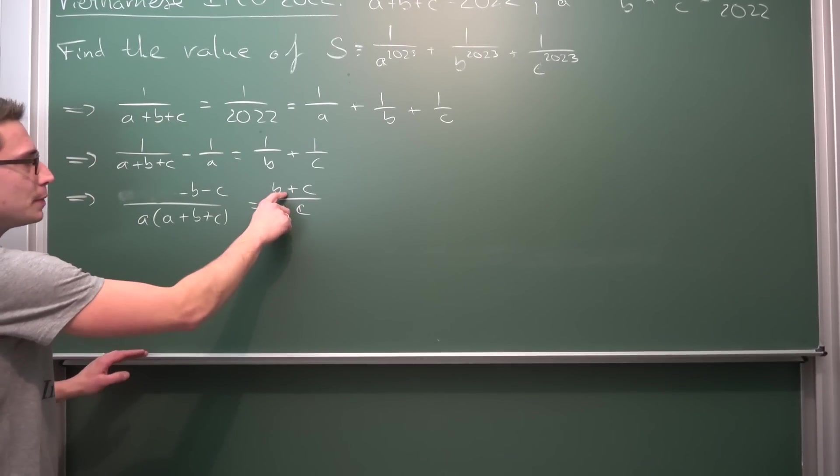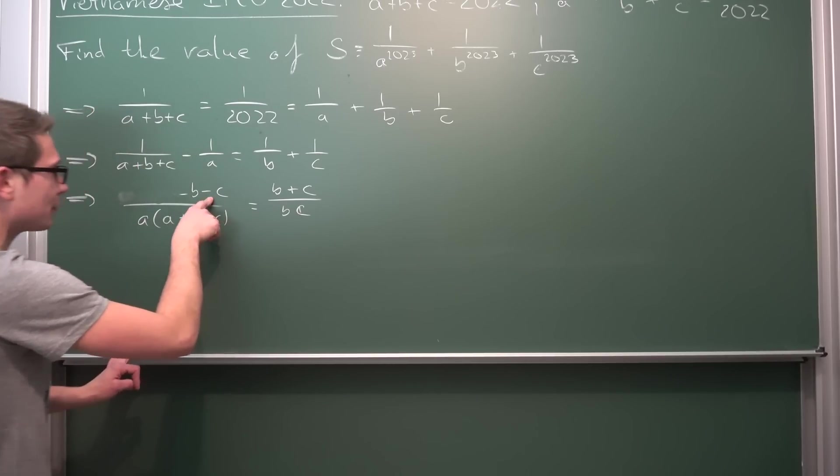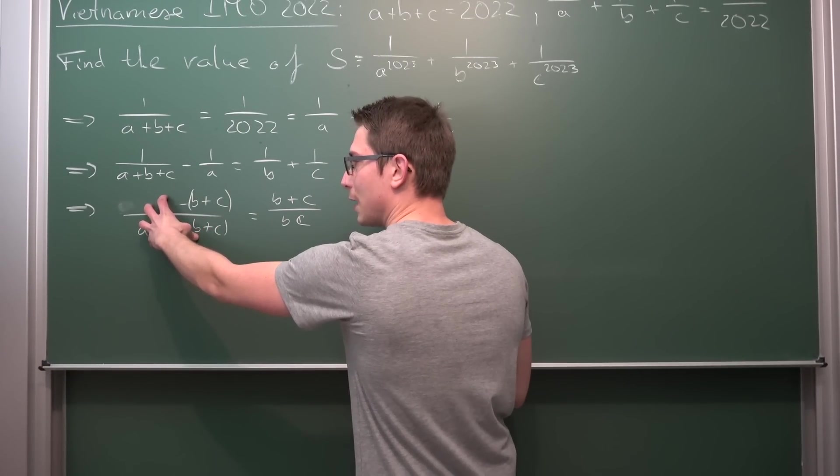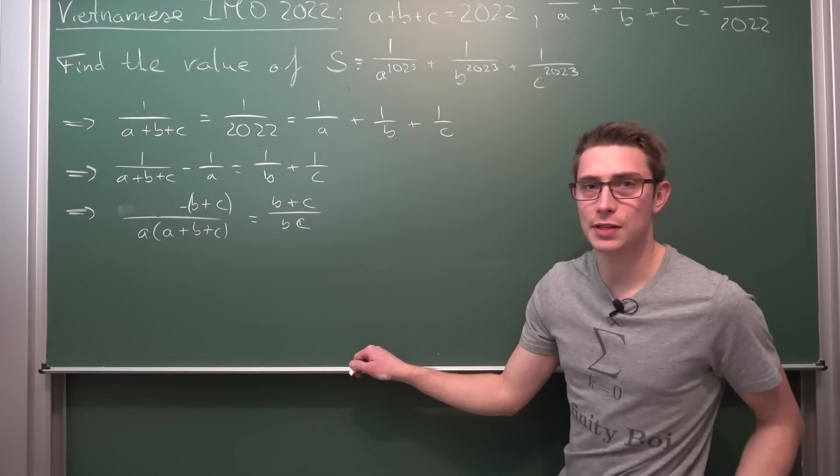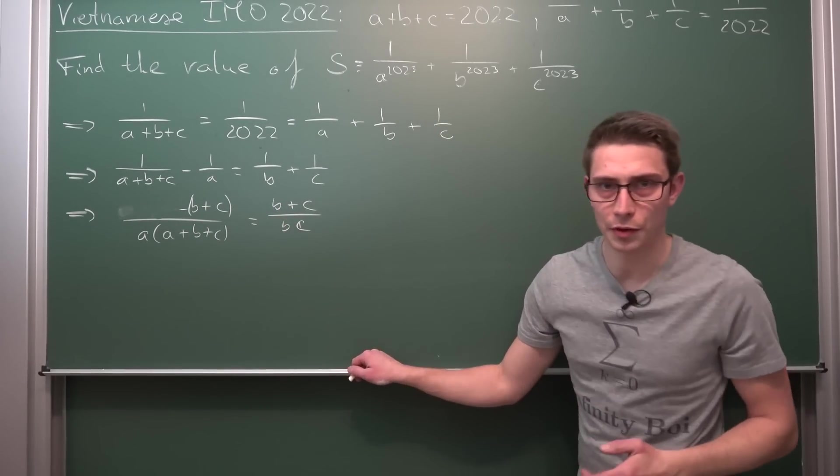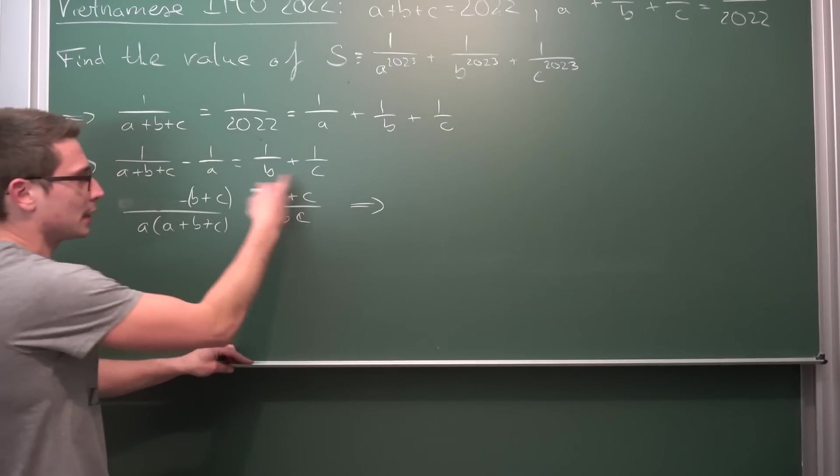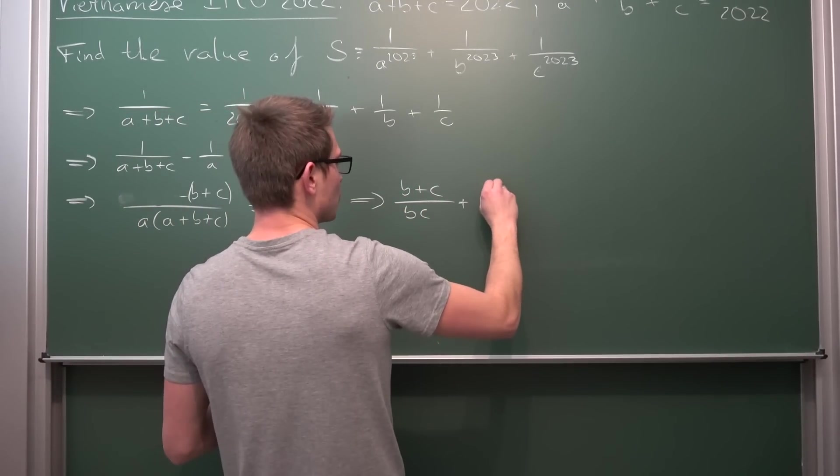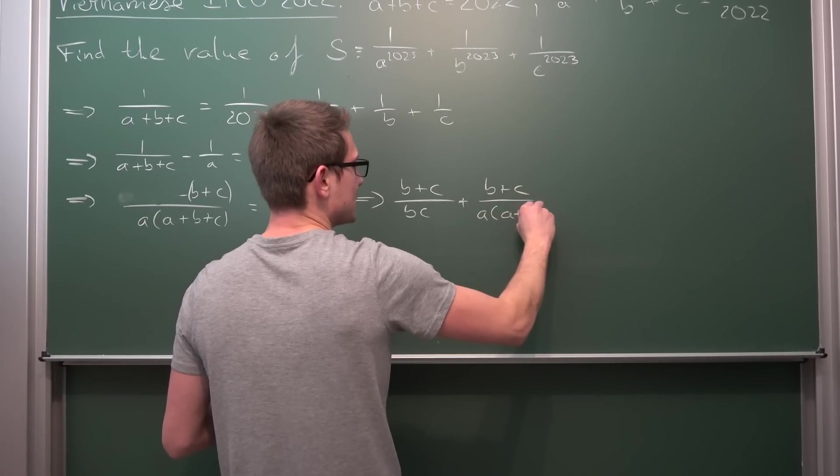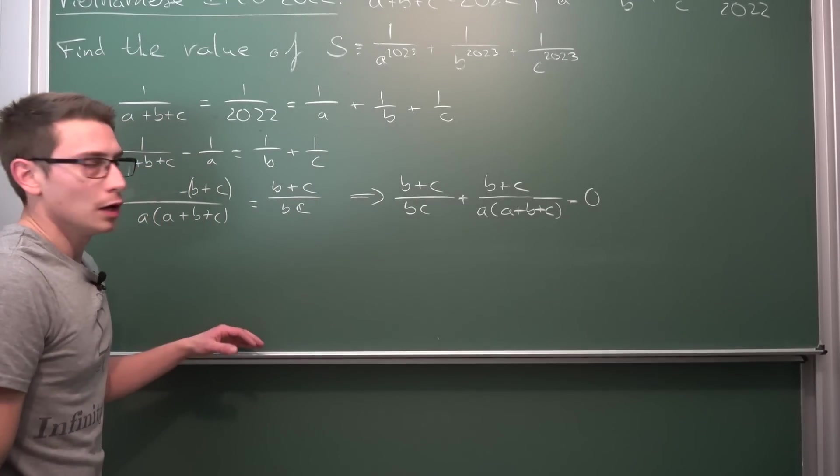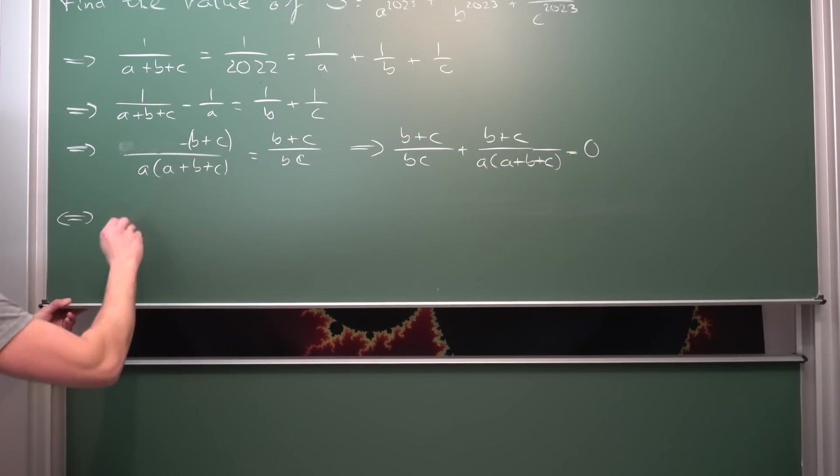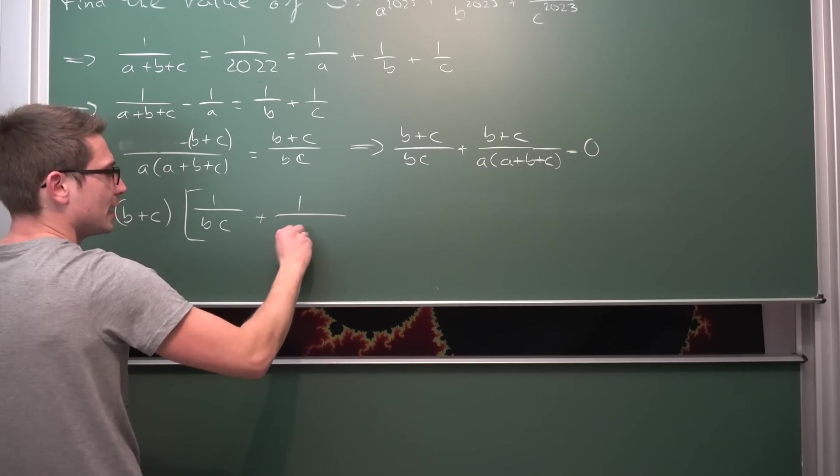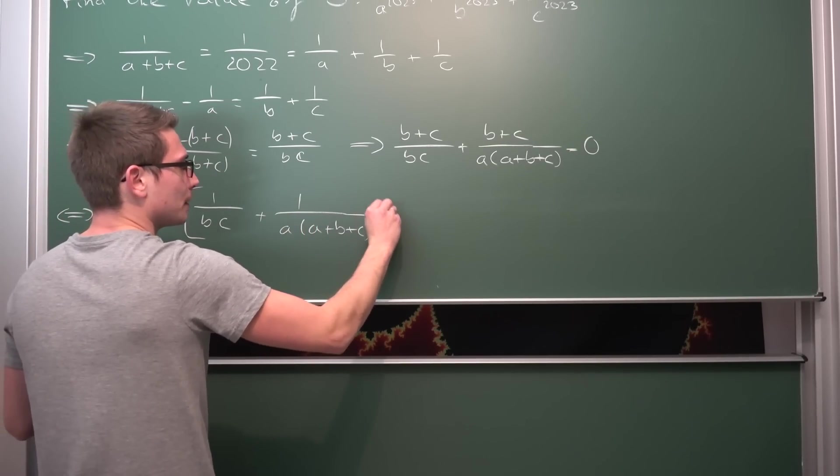Now one cool thing is we have B plus C here and basically we also have B plus C on this side. By factoring out the negative one we're also going to get B plus C here. So the next thing we can do is we can add all of what we have here on both sides giving us something added to another something equal to zero and the cool thing is we are going to get B plus C as a common factor. So let's bring this part to the other side by adding it giving us B plus C divided by BC plus B plus C divided by A times A plus B plus C and all of this is equal to zero. Now we can factor out the B plus C. That's equal to saying B plus C times big brackets 1 over BC plus 1 over A times A plus B plus C is equal to zero.